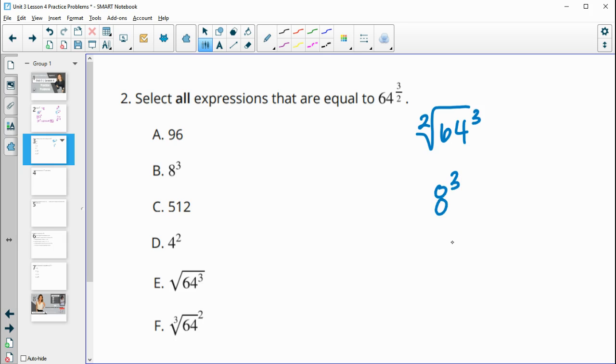And then I still have to the third power. And eight to the third power is eight times eight, which is 64 times eight again, which is 512.